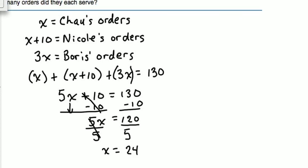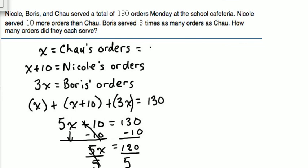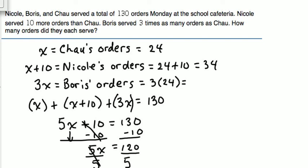So what we've now found out is that Chao served 24 orders. We know that Nicole served 10 more than that, so 24 plus 10 gets us 34. We know that Boris served 3 times as many as Chao, so 3 times 24 gets us 72. To verify: 24 plus 34 is 58, and 58 plus 72 is 130, so those answers are correct.